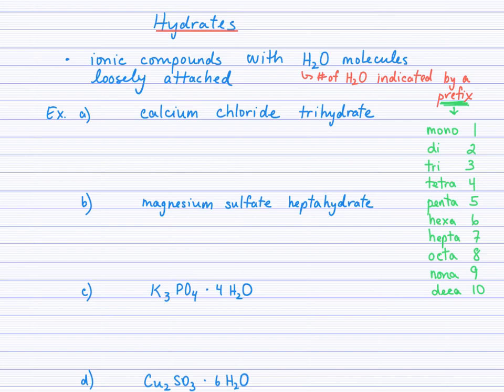We follow the same cross-down method for the ionic compound just as we did before, so symbols and charges, and then we cross our numbers down. So we'll come up with a 2 here and a 1 here, and so we have CaCl2, and then we put a dot.